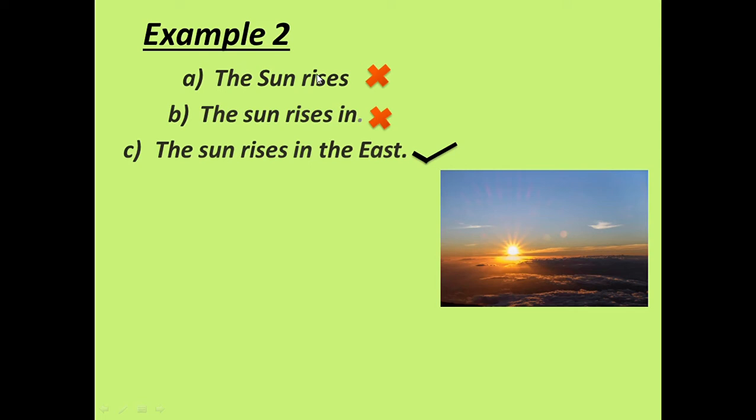Students, here, read these groups of words in example 2. A number is, the sun rises. B is, the sun rises in. In C, the sun rises in the east.